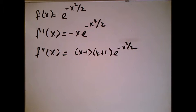I need a second derivative, so I'm going to take it ahead of time. I have to use the product rule and simplify a little bit, but what I'm going to get after I simplify is (x minus 1) times (x plus 1) times e to the minus x squared over 2.